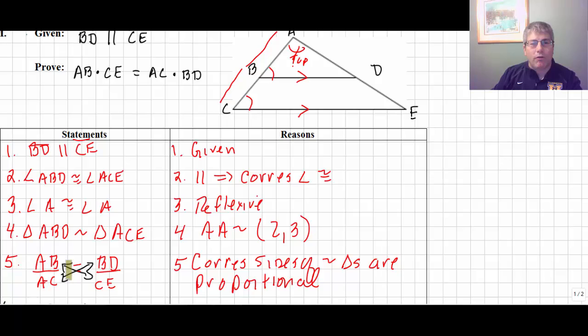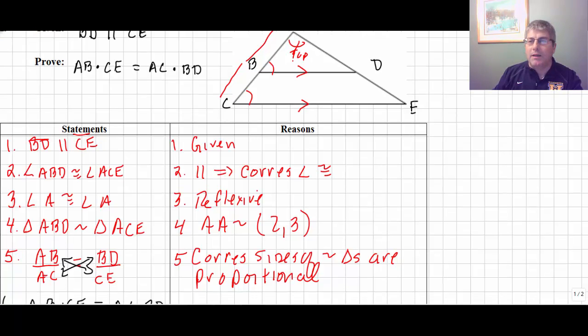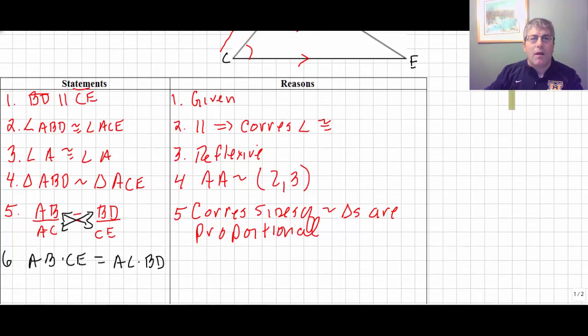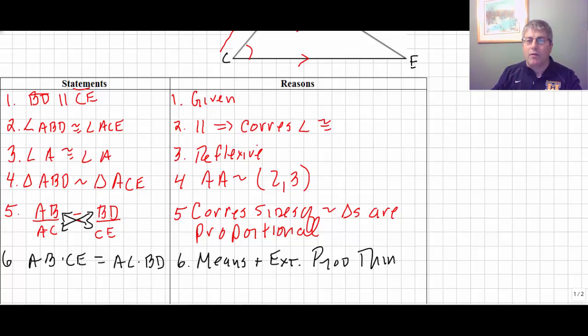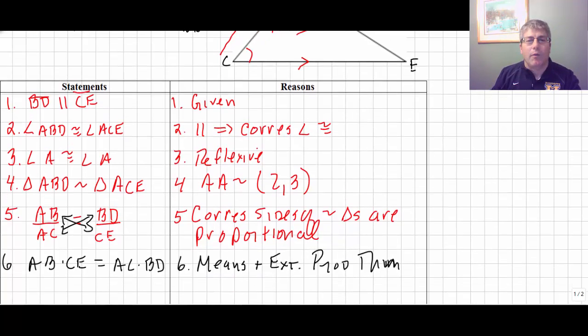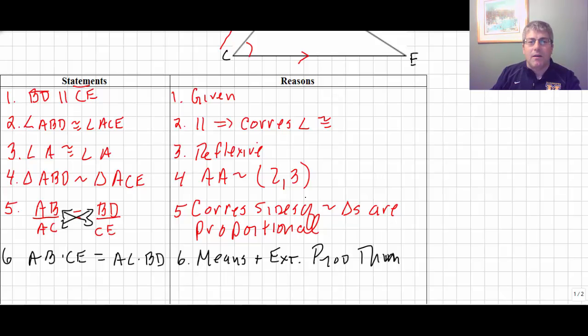We have AB times CE, we know those are going to be kitty corner from each other and AC times BD are going to be kitty corner from each other. Two of those will be our means and two of those will be our extremes. And our final reason then for multiplying out a proportion is the means and extremes product theorem. That's what allows us to multiply out a proportion.